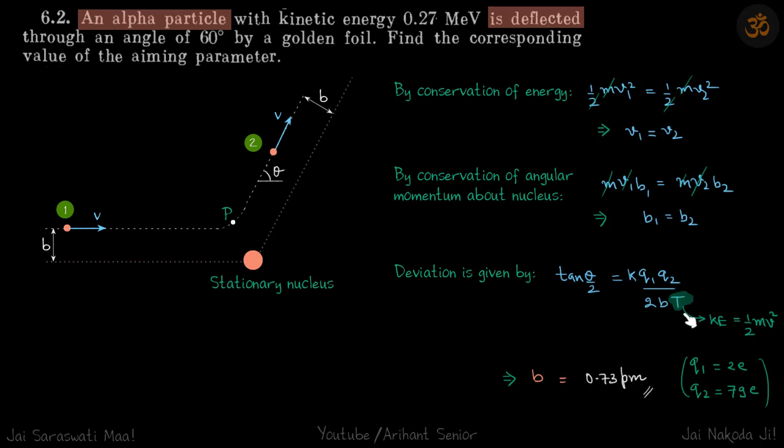There are some things you can see here. If b is small, obviously the deflection will be more. If b is large, it may pass undeflected. So tan(θ/2) is inversely proportional to b, which makes sense.